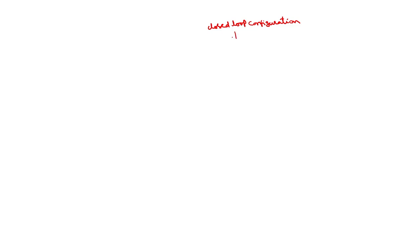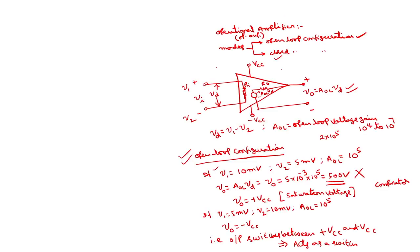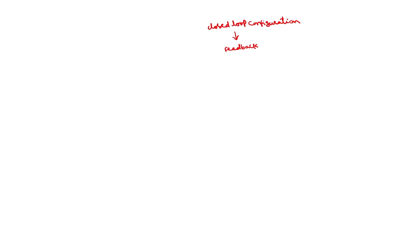In closed loop configuration we use feedback. The drawback of open loop configuration is its very high gain, on the order of 10 to the power of 4 to 10 to the power of 7. To reduce that gain, we normally use feedback.